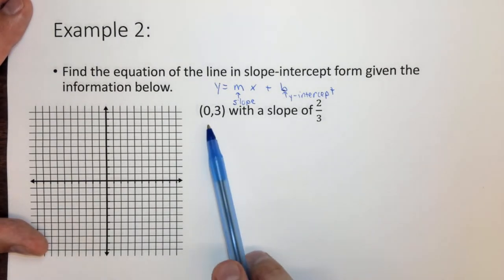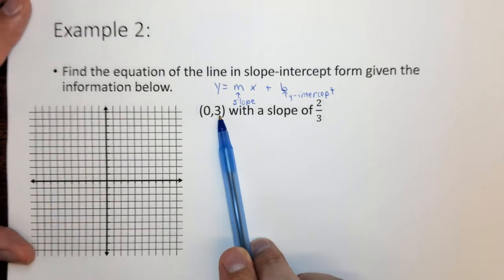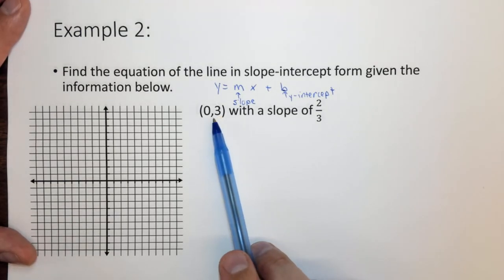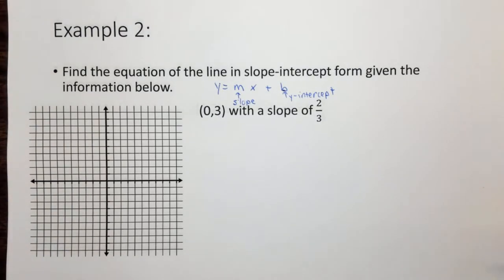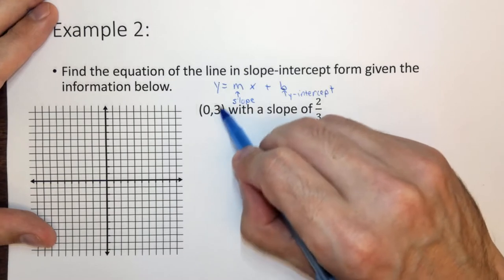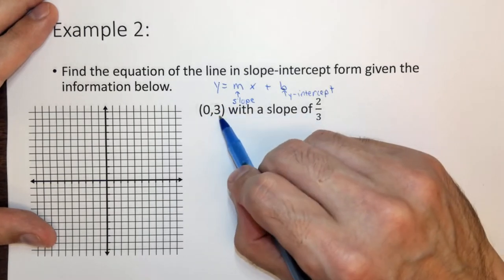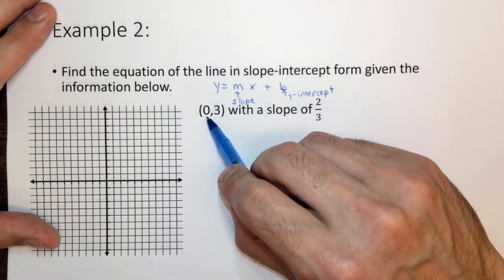So in this case, we're given a point 0, 3. So we need to basically realize that this is the y-intercept, because the y-intercept is the place at which you cross the x-axis. Said another way, it's the place at which x equals 0.